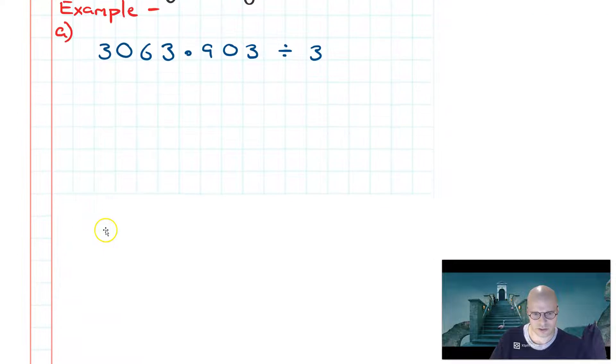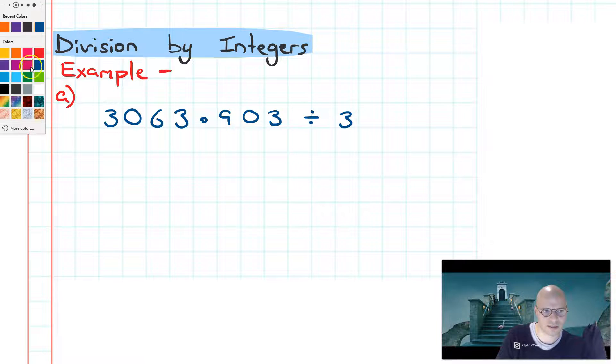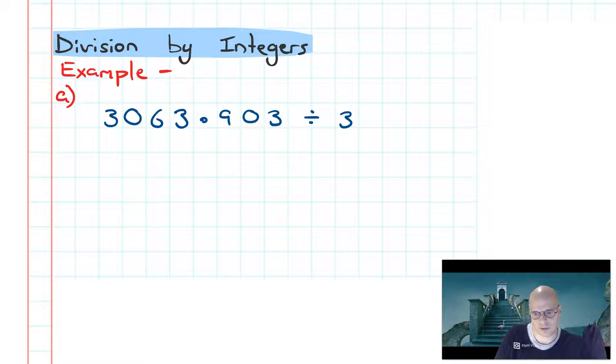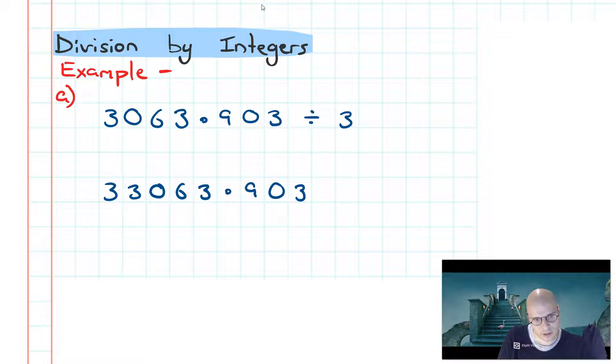This can be done using the simple division algorithm. Setting this up, I first need to identify my divisor, which is 3 in this case. Next I identify my dividend, which is this number shown here, 3063.903. I'll write that next to my divisor, remembering to put in my decimal point. Then I'll draw in my equation symbol to show that we're going for division, and draw a nice straight bar across. All right, I'm all set up.